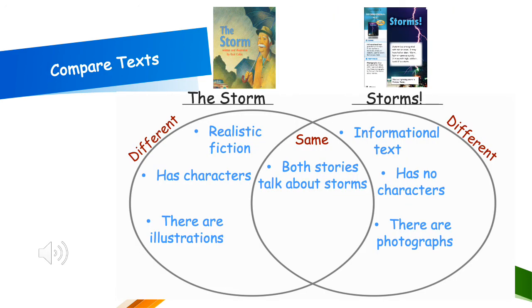So, when you compare two or more stories, we use a graphic organizer called a Venn diagram. A Venn diagram shows you how the stories are the same and how they are different. Let's look at how the storm and the story storms are the same. Both stories talk about storms. You would write how they are the same in the middle or the center of the circle.